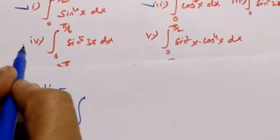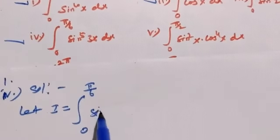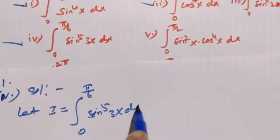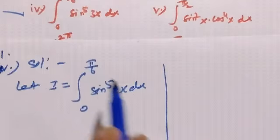Let I equal the integral from 0 to 5π/6 of sin⁵(3x) dx. So we are going to use the reduction formula with limits 0 to 5π/6.